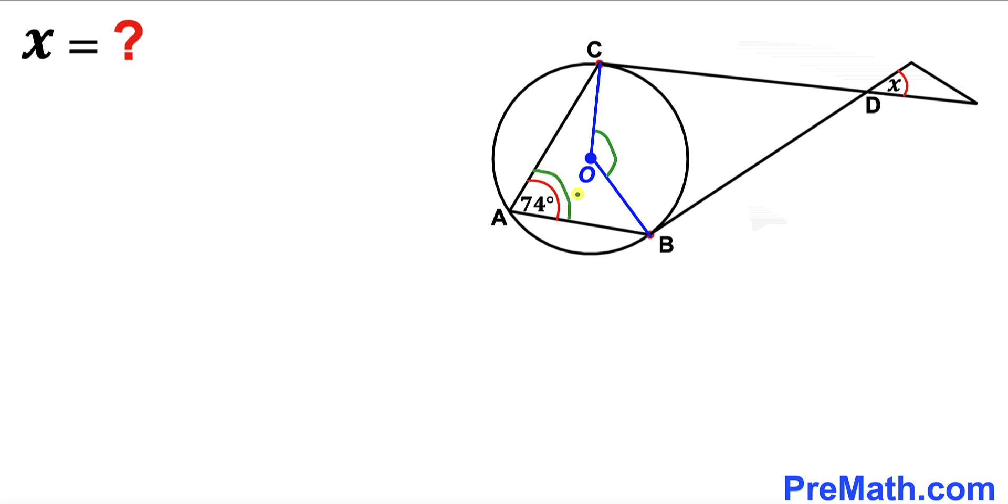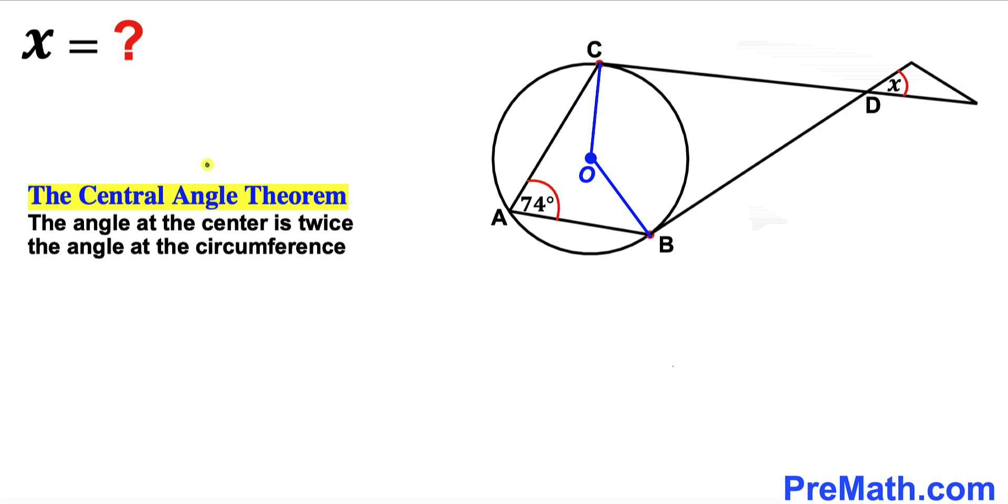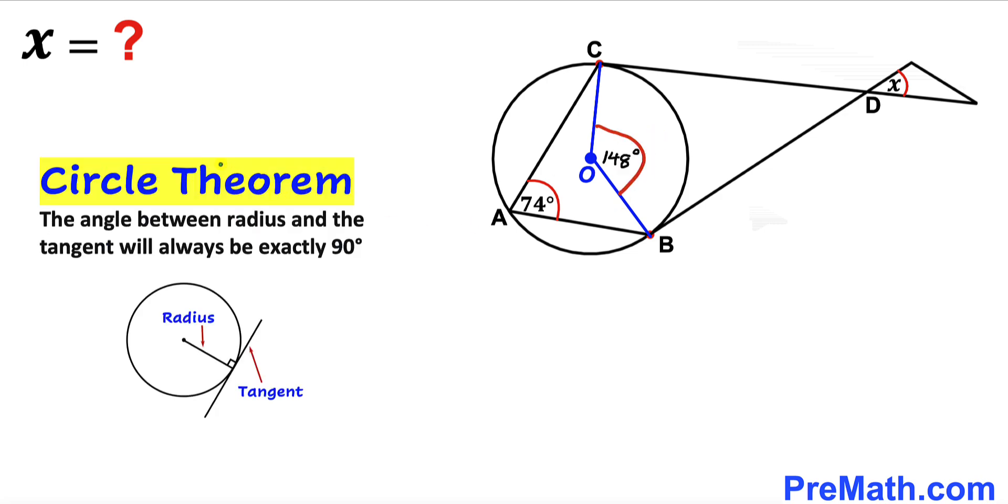Now let's recall the central angle theorem. According to this theorem the angle at the center is twice the angle at the circumference. So therefore this angle has got to be two times 74, that means this angle has got to be 148 degrees and here's our next step.